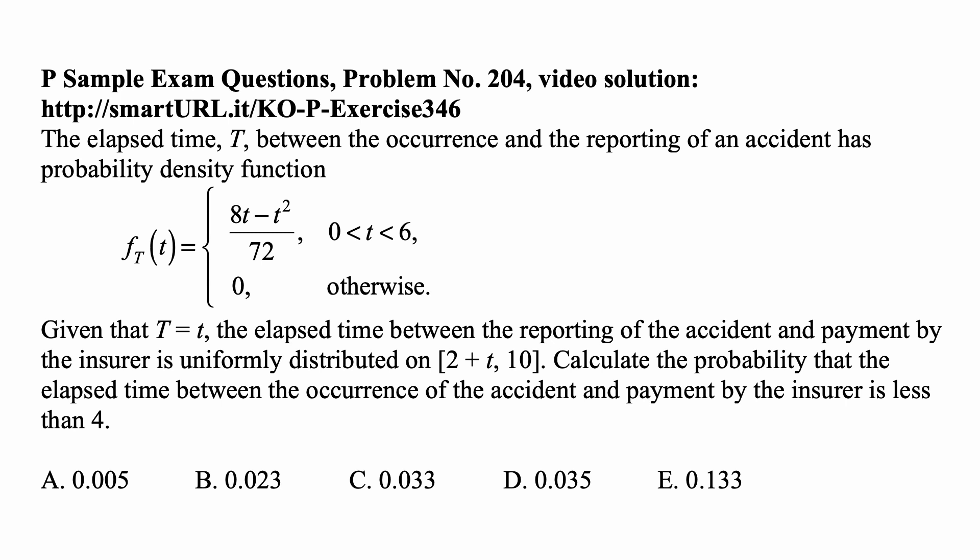Given that t equals a specific value lowercase t, the elapsed time between the reporting of the accident and payment by the insurer is uniformly distributed on [2+t, 10]. Calculate the probability that the elapsed time between the occurrence of the accident and payment by the insurer is less than 4.